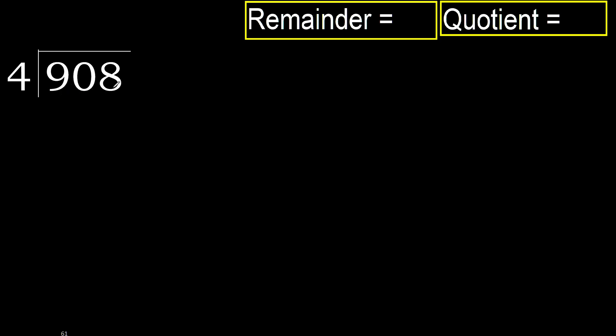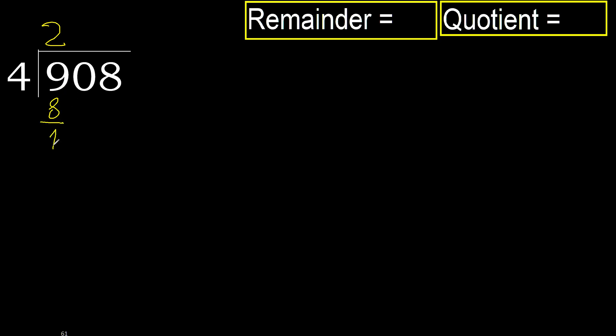908 divided by 4. Starting with 9 — 4 multiplied by which number is nearest to 9 but not greater? 4 multiplied by 3 is 12, which is greater. 4 multiplied by 2 is 8, which is not greater. Subtract: 9 minus 8 is 1.